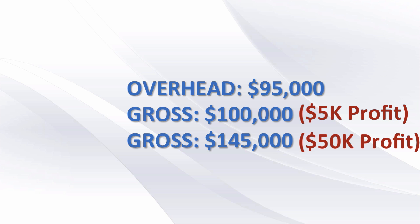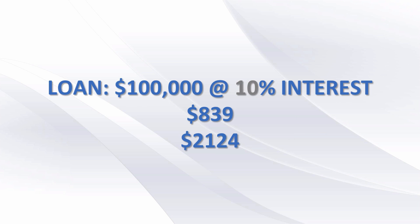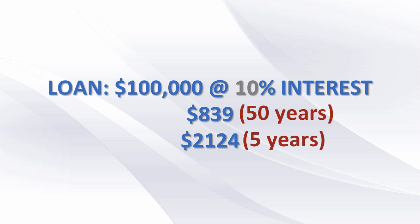Let's add compounding interest into this. Here I have a loan for $100,000 at 10% interest. One person is paying $839 a month, the other person is paying $2,124 a month. It doesn't look like 10x — it looks like two, two-and-a-half times. But this first loan is going to take 50 years to pay off, and that second loan is only going to take five years. That's 10x.